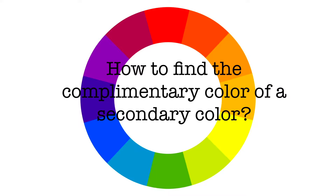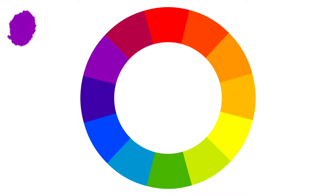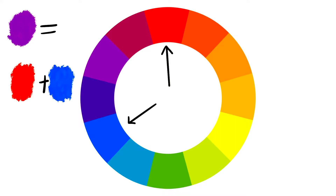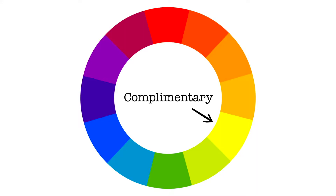For example, if you have a purple and you want to figure out its complementary color, break down the purple first, which is red and blue. The remaining primary color is yellow, so that's its complementary color. Then you match the tint, tone, or shade and you'll have a perfect complementary match.